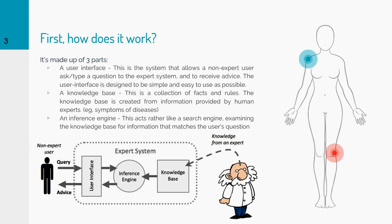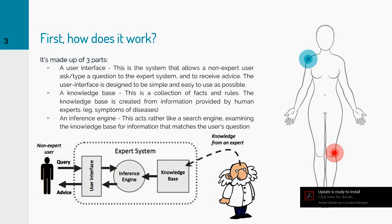An expert system is made out of three parts. The first is a user interface. This is the system that allows a non-expert user to ask or type a question to the expert system and to receive advice. This is why it is made as simple and easy to use as possible — the non-expert user should know and understand how to use it.